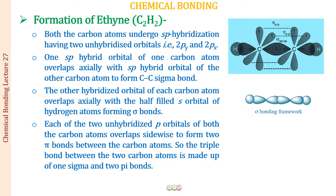Whenever there is SP hybridization, the molecule has a linear geometry. This is how we represent the ethyne molecule — showing the sigma bond between carbon and hydrogen, the triple bond between the two carbons, and on the other side a sigma bond between carbon and hydrogen. We will be learning more about these types of molecules, which will be discussed in detail in the coming courses.